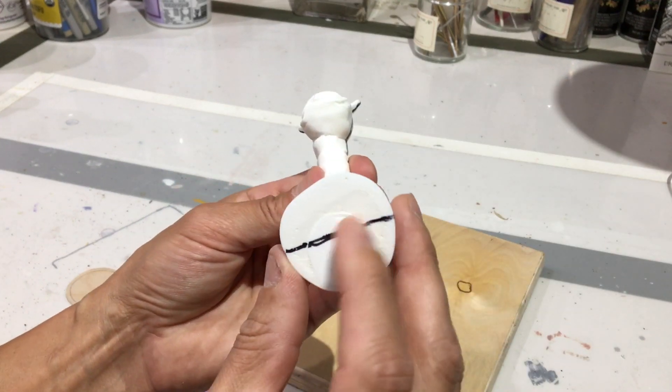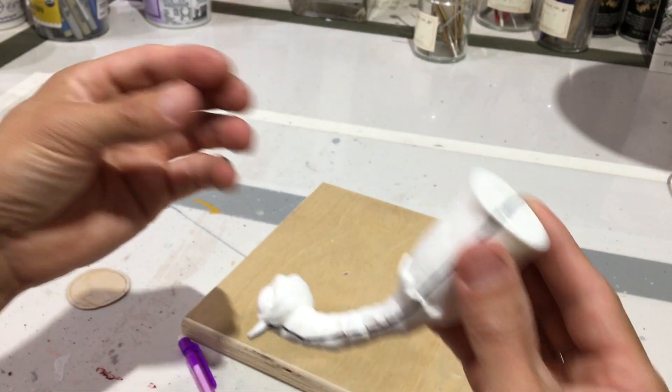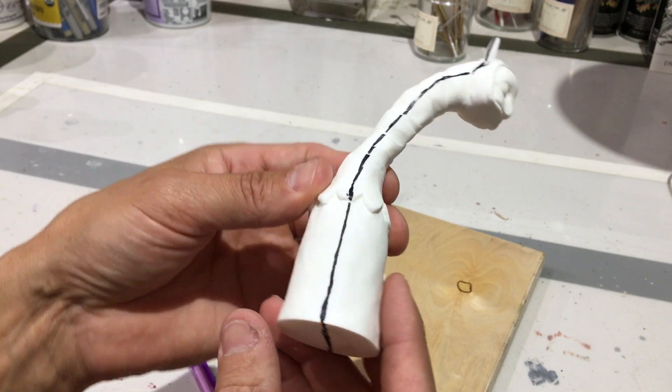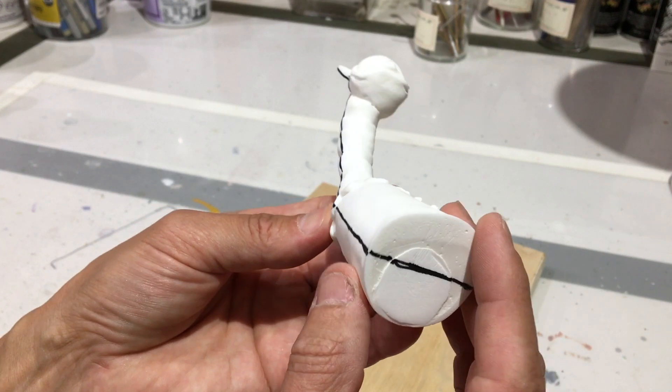I always try to split the piece evenly down the middle so I have two even halves to the mold. This just gives you a mold that fits well together and it's kind of like a solid construction when each half is the same size.